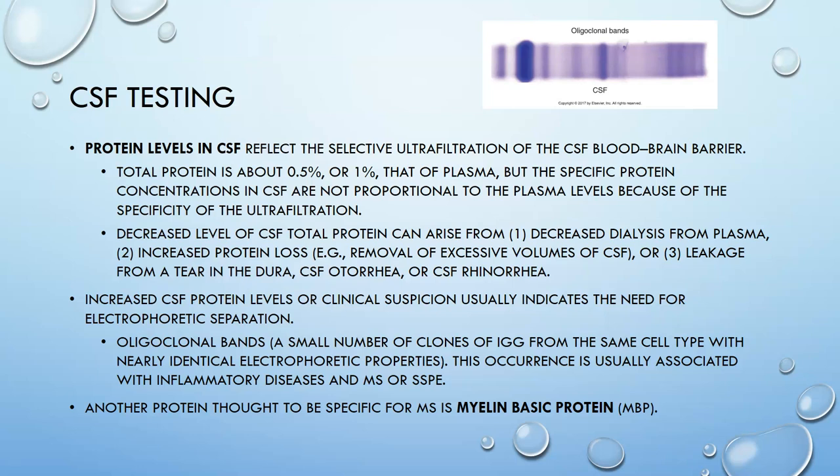Protein levels in spinal fluid reflect the selective ultrafiltration of the blood-brain barrier, meaning that not a lot of protein crosses over. Total protein in CSF is only about 0.5% to 1% of that of plasma, and specific protein concentrations in spinal fluid are not proportional to plasma levels because of the specificity of that ultrafiltration. Decreased CSF total protein may suggest decreased dialysis from plasma or increased protein loss — for example, from removal of excessive volumes of spinal fluid, leakage from a tear in the dura, CSF otorrhea (leaking from the ears), or CSF rhinorrhea (leaking of spinal fluid from the nose).